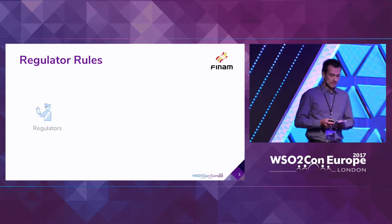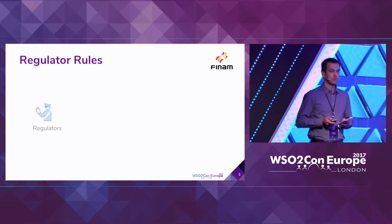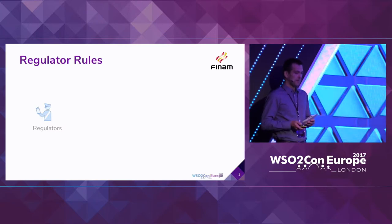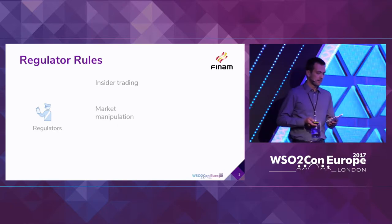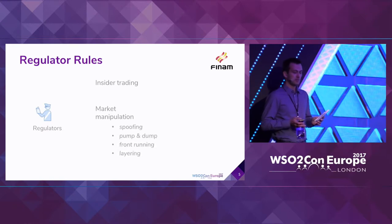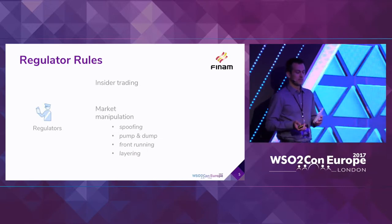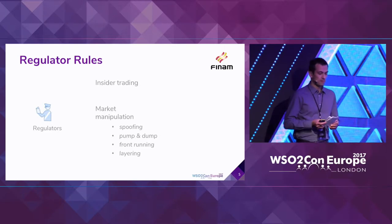Regulator rules. These risks are mostly referred to the company because all brokers must observe the financial regulator rules. Stock market manipulation and insider trading are the biggest group of illegal trading practices. Some sets of illegal orders can be done within milliseconds — you can see spoofing, pump and dump, and other algorithms — and some illegal practices can be done within hours or days.